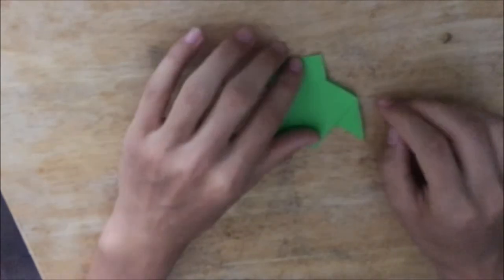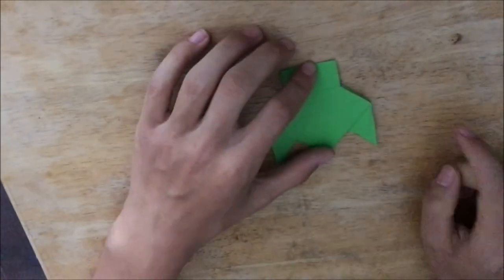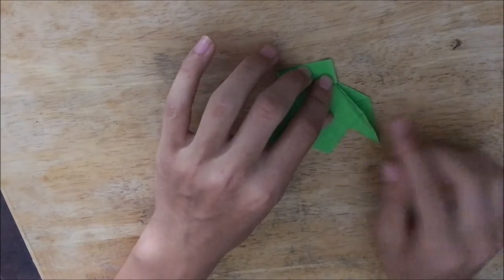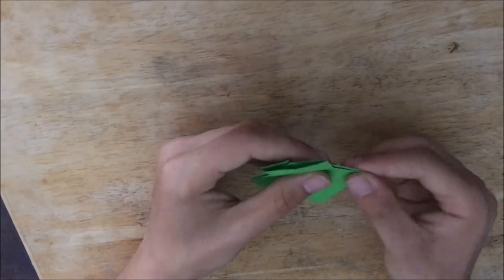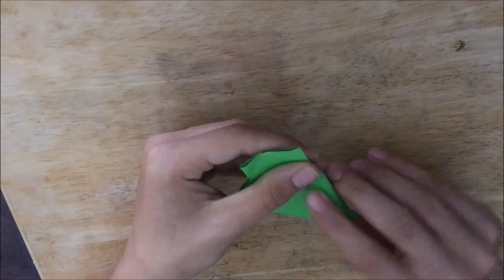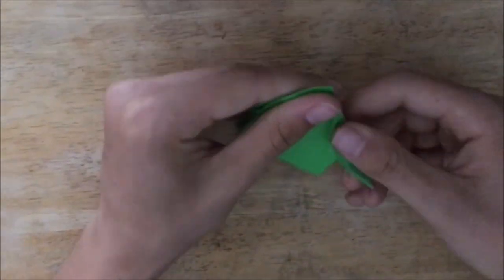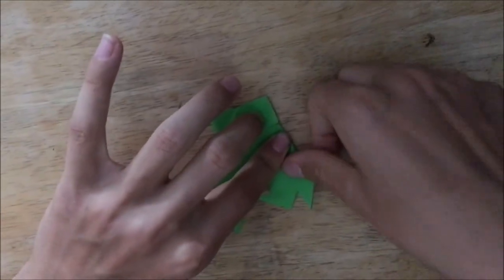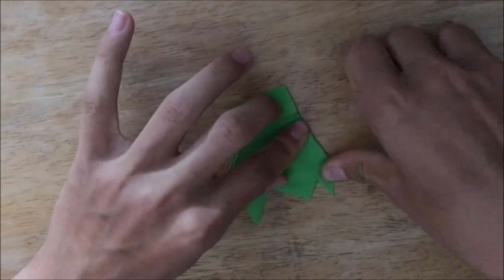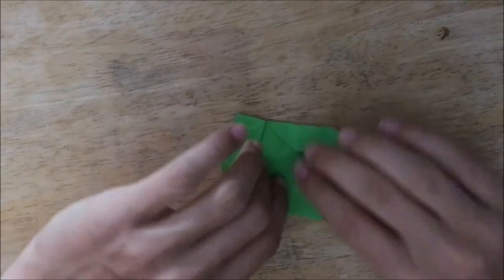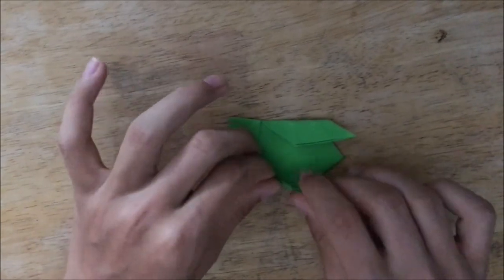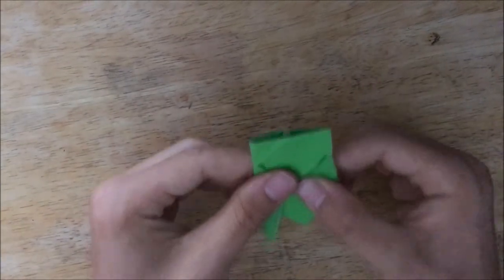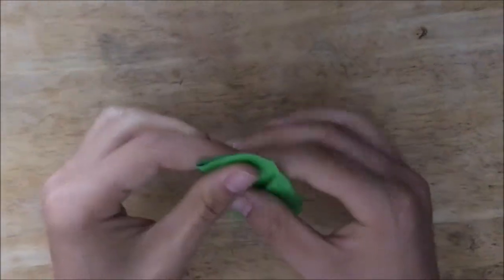So to do this, all you want to do is fold the sides into the center, but at an angle. So it won't be all the way into the center. It's going to look like that. And then do the same thing on the other side. And those are the wings of the cicada.